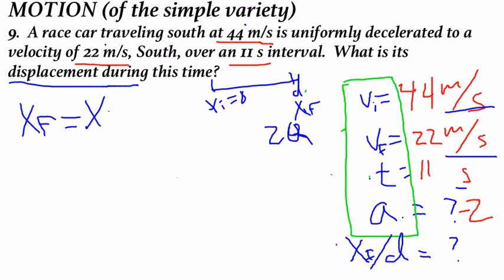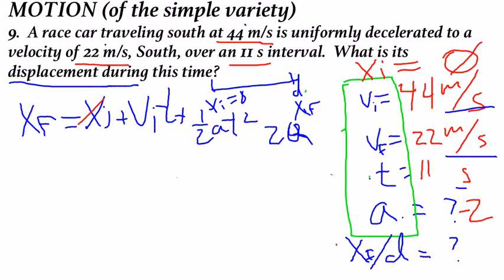XF equals XI plus VI times T plus one half AT squared. Mr. Spudyk, you don't give us initial position. If I don't ask for or give you the initial position, that means I don't care about the initial position because we're going to start from zero. So that is gone.